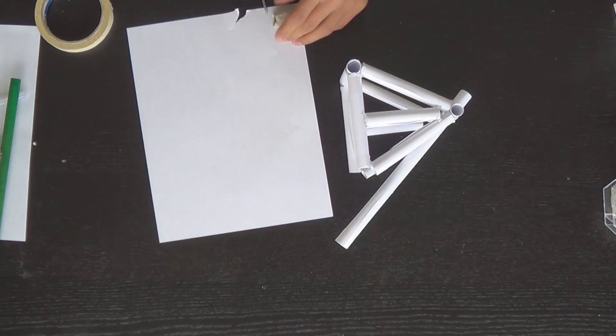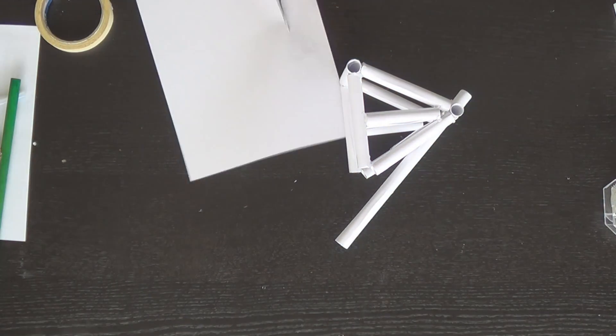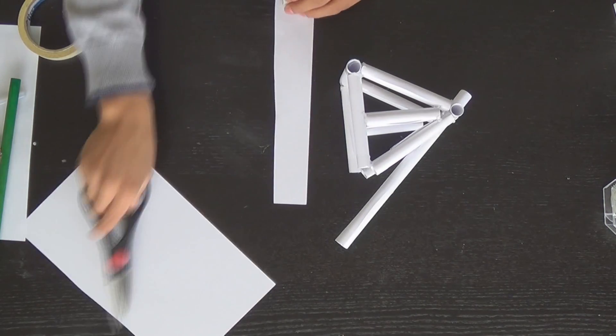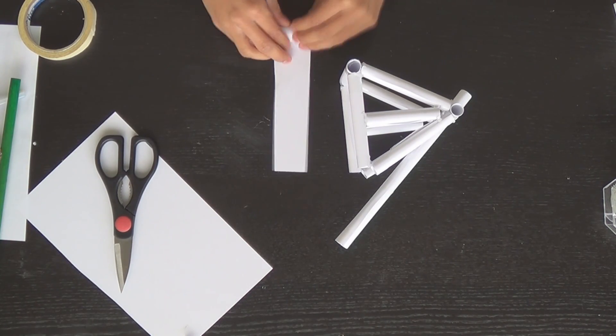And with that done, we'll now just wrap the pennies in a roll of paper, just to keep the same look as the rest of our catapult, or trebuchet, sorry.